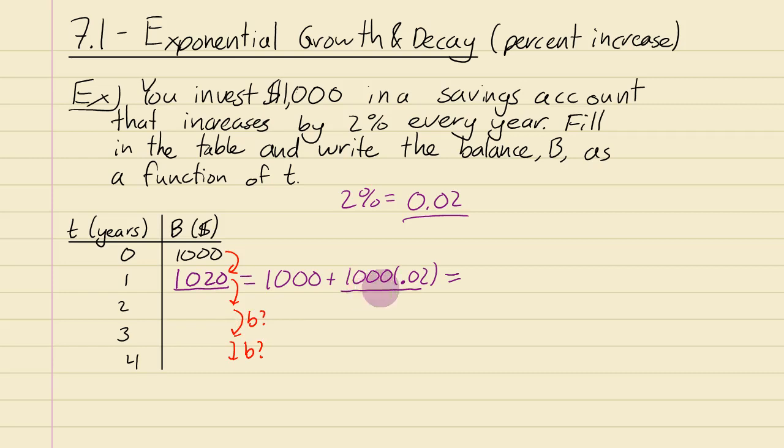What I would do is you have a common factor of 1,000 here you can take out. And what would you have left over that you can distribute that 1,000 into? Well, 1,000 times 1 will give you that 1,000 and then 1,000 times 0.02 gives you the 2% times 1,000. And you could just combine it and say 1 plus 0.02 is the same as 1,000 times 1.02 because that's what 1 plus 0.02 is.